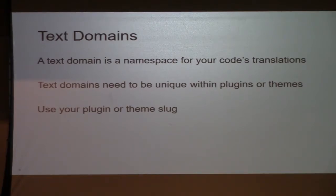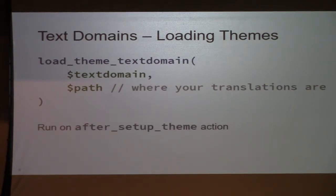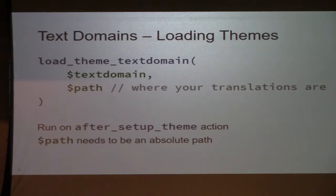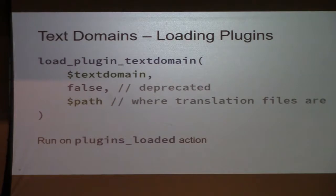The first thing you need to do is load your text domain when your plugin or theme loads. If you're writing a theme, use load_theme_textdomain. The first argument is the text domain; the second argument is the path to where your translations are located. You need to run this on the after_theme_setup hook, and the path needs to be an absolute path — it can't be relative, it has to be absolute from the root of the file system.